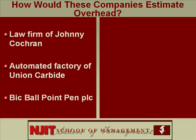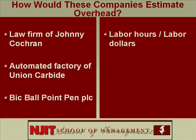Take the first one — the law firm of Johnny Cochran. How would they estimate overhead? If you said labor hours or labor dollars, you're dead on. This is because most of the overhead in a law firm relates to people's salaries. How about an automated factory belonging to Union Carbide? If you said machine hours, dead on — this is because most of the overhead relates to costs associated with machines.